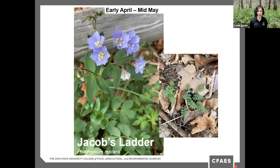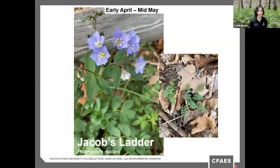Jacob's Ladder is in the phlox family, found in rich, shaded, moist woodlands. Those leaves are pinnately compound, resembling a ladder — the name refers to a ladder seen in a dream by the biblical Jacob. Its flowering stems are low to the ground but also tend to droop to the side, giving the plant a sprawling look. The bell-shaped flowers are a shade of blue that really pops on the forest floor. Though those blooms are ephemeral, it will persist vegetatively into the summer and is pollinated by bees and butterflies.